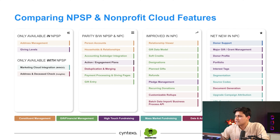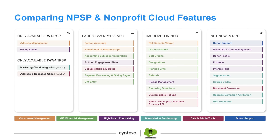The net new features available only in Nonprofit Cloud — not in NPSP — include donor support, grant management, donor profile, portfolio, interest tags, segmentations, source codes, document generation, upgrade campaigns, attribution, and URL generator. Based on this feature differentiation, you can make an informed decision on which solution to go ahead with.